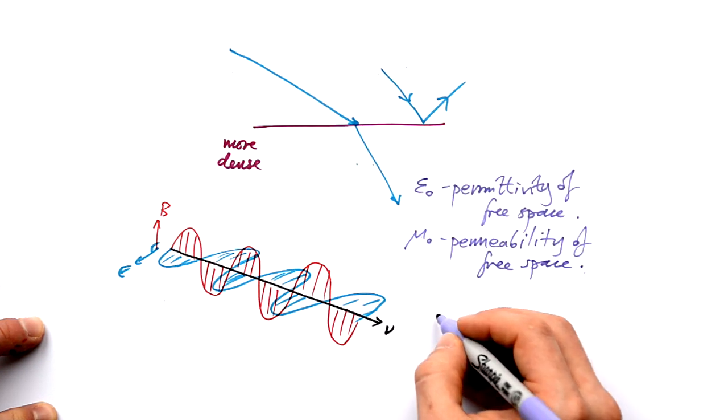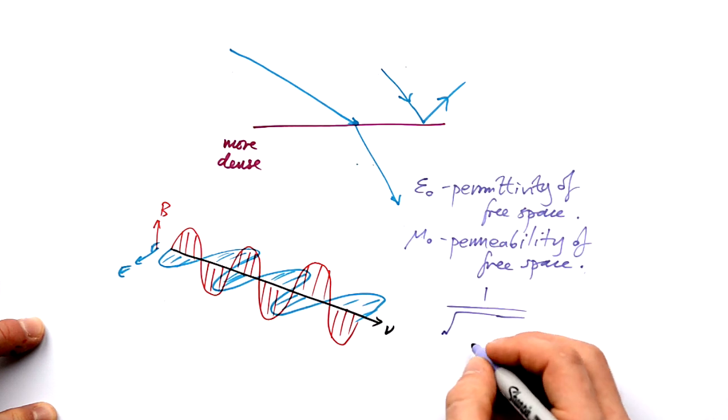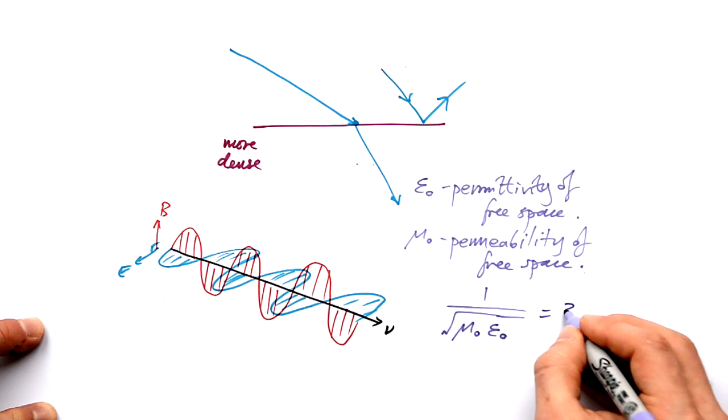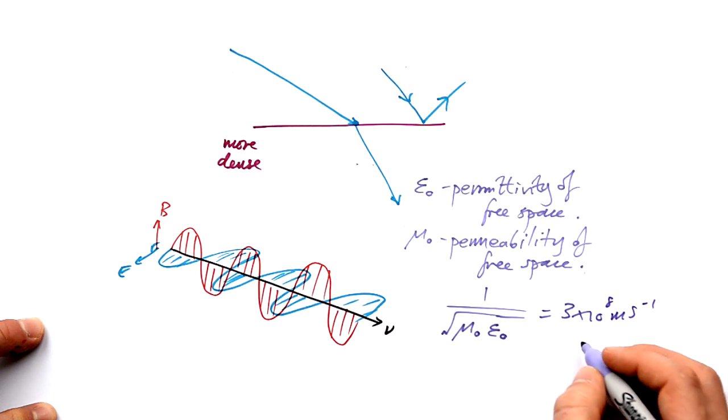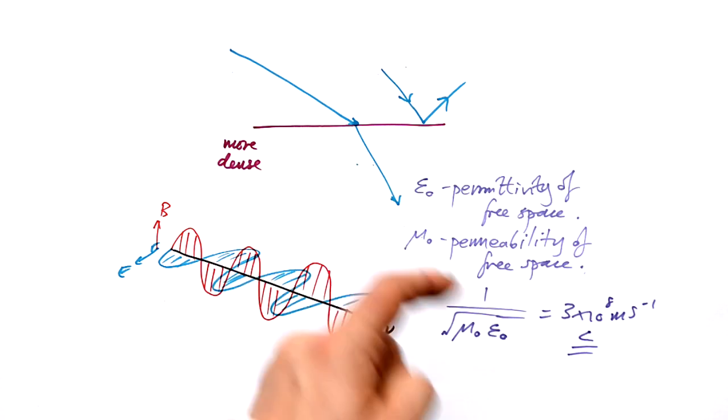What he found is that if you combine these two constants together and take one over the square root of the permeability times the permittivity of free space, it comes out as 3 times 10 to the 8 meters per second. That's right, we found C, the speed of light in free space in a vacuum by using these two constants.